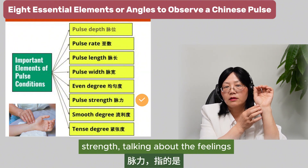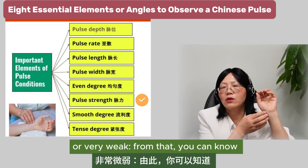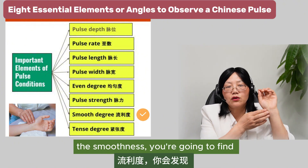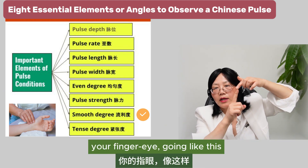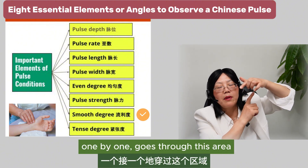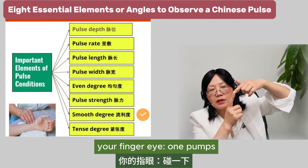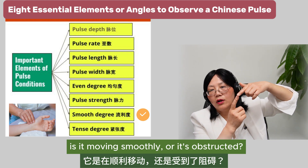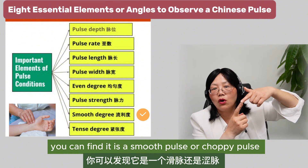Strength refers to how the pulse responds to your finger — very powerful or very weak. From that you can know if it's an excess or deficient problem. For smoothness, you feel the pulsation bumping into your fingertip like small balls going one by one. Is it moving smoothly, or is it obstructed? That tells you if it's a smooth pulse or a choppy pulse.